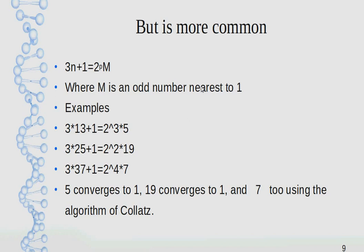3n+1=2^k*M where M is an odd number nearest to 1. Examples: 3*13+1=2^3*5, 3*25+1=2^4*19, 3*37+1=2^4*7. The numbers 5, 19, and 7 all converge to 1 using the algorithm of Collatz.